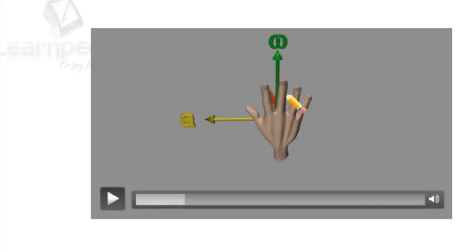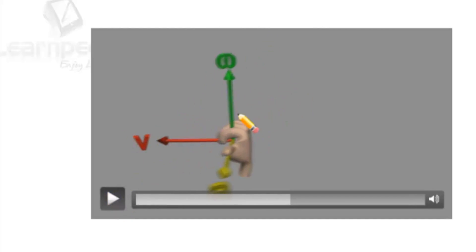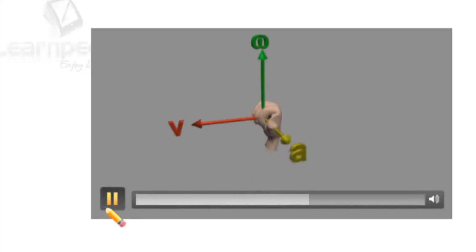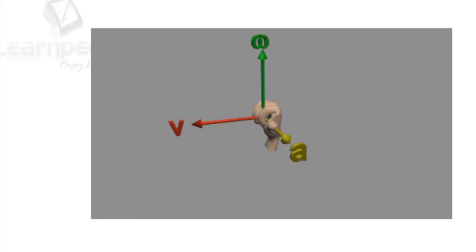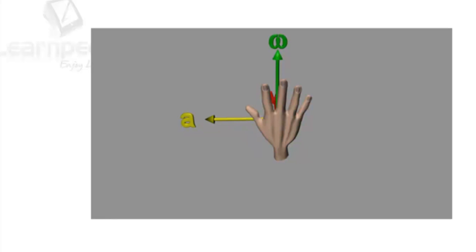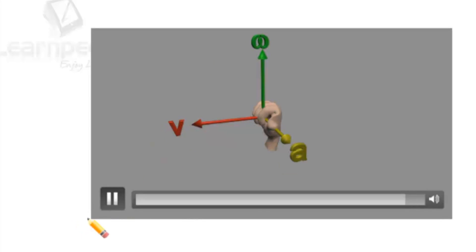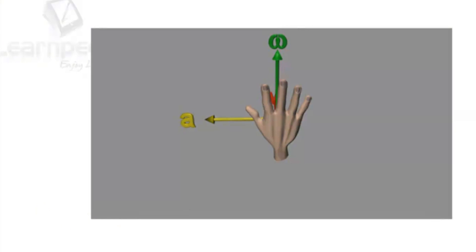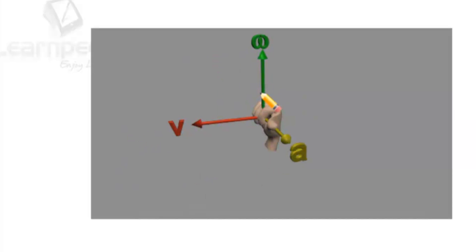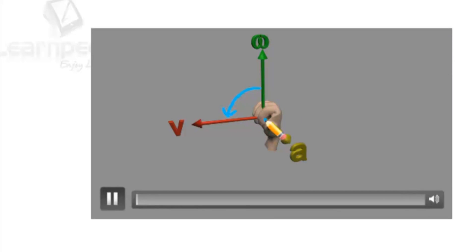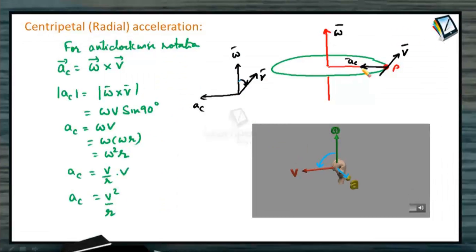Now omega is in this direction, V is inward. Using the right-hand rule — starting from omega, curling fingers towards V — the thumb gives the direction of centripetal acceleration. So ω × V gives us centripetal acceleration. The centripetal acceleration is AC = V²/R = ω²R = ωV.